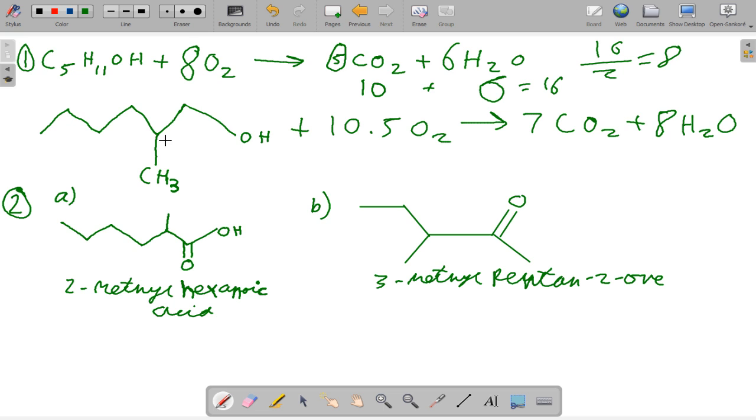For this one, this is 2-methylpentanol. 11 oxygen gives you 7CO2 plus 8H2O. 7 times 2 is 14, 8 times 1 is 8. So 14 plus 8 is 22. That's not right. Yes, 22, so you get 11. That must be a typo in the textbook, so I will put 11.